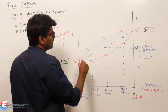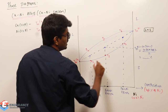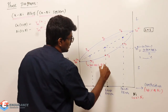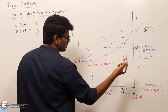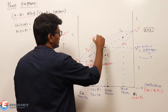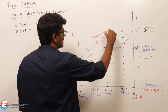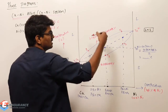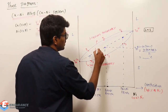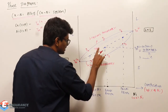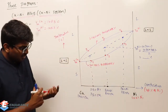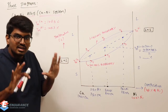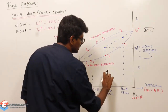All the TL points lie on one curve and all the TS points lie on another curve. The TS curve is called the solidus boundary and the TL curve is called the liquidus boundary. If I take any point below the solidus boundary it is going to remain in solid state. Any point above the liquidus boundary is completely in liquid phase. Between the liquidus and solidus boundaries, the material exists as liquid plus solid in equilibrium.